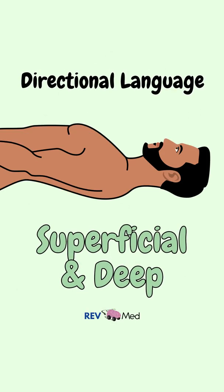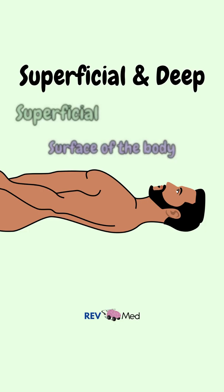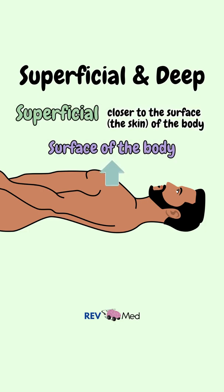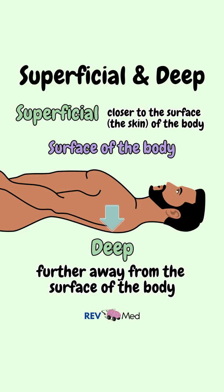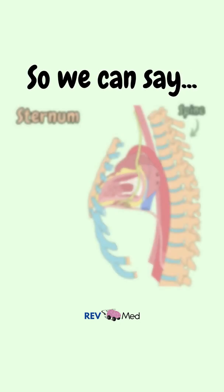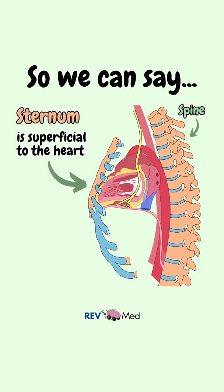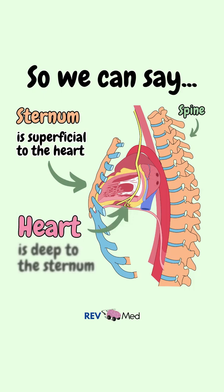Lastly we have the terms superficial and deep. Superficial means closer to the surface — the skin of the body. Deep means further away from the surface. So we can say the sternum is superficial to the heart, or the heart is deep to the sternum.